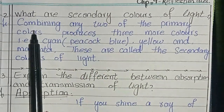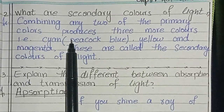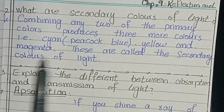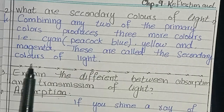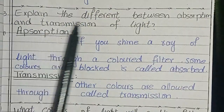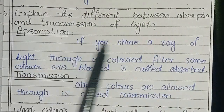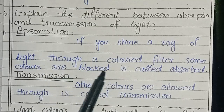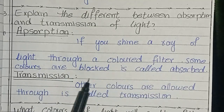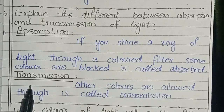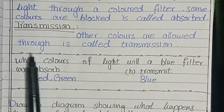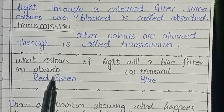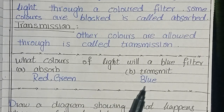Second question: what are the secondary colors of light? Combining any two of the primary colors produces three more colors — for example, Cyan (peacock blue), Yellow, and Magenta. These are called the secondary colors of light. Third question: explain the difference between absorption and transmission of light. If you shine a ray of light through a colored filter, some colors are blocked and absorbed — this is absorption. Other colors are allowed through — this is transmission. What color of light will a blue filter absorb? Red and green. What color does it transmit? Blue.